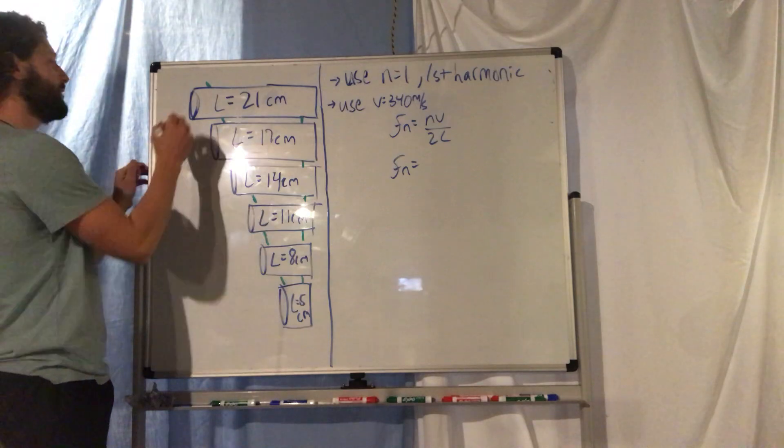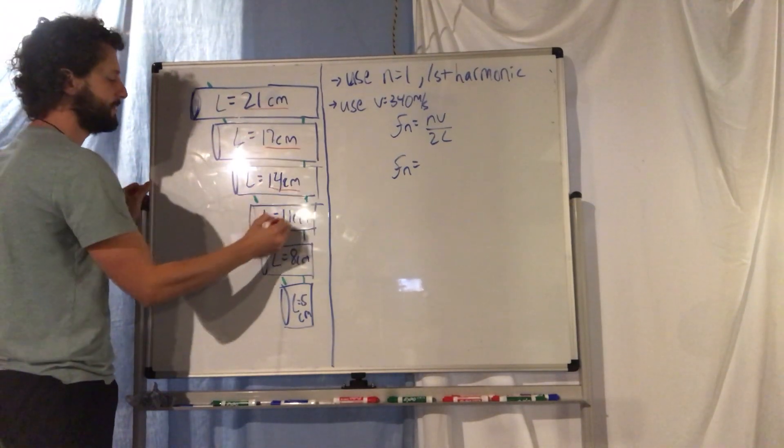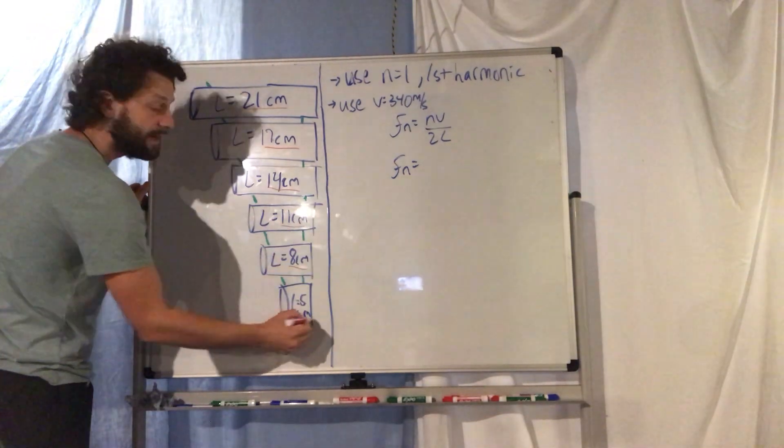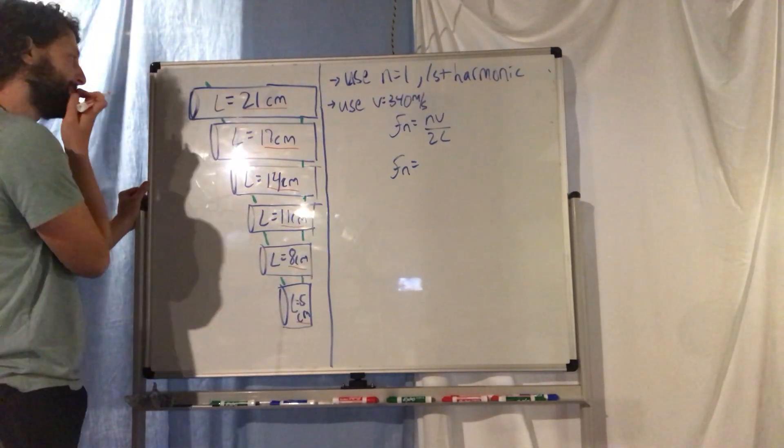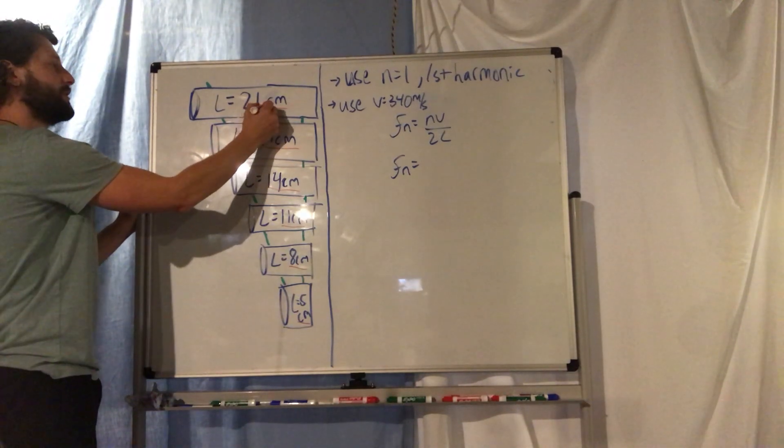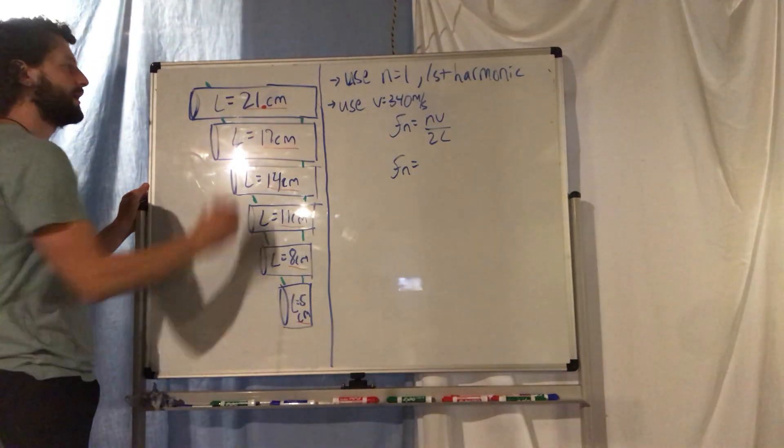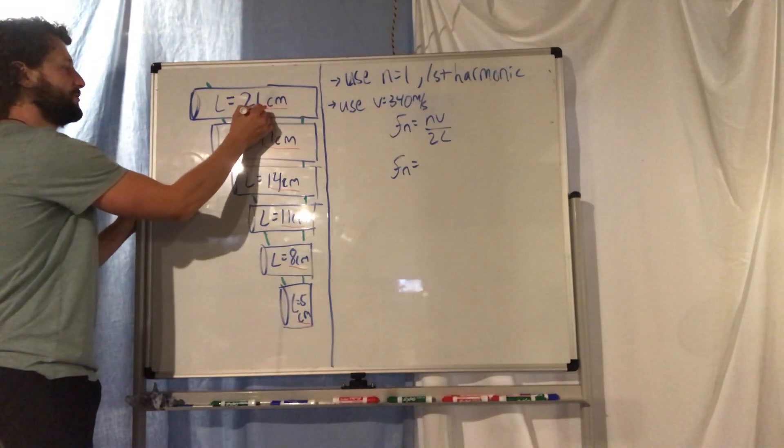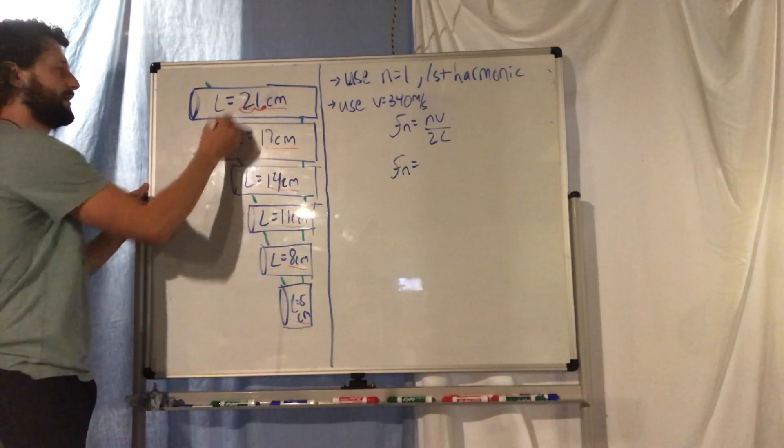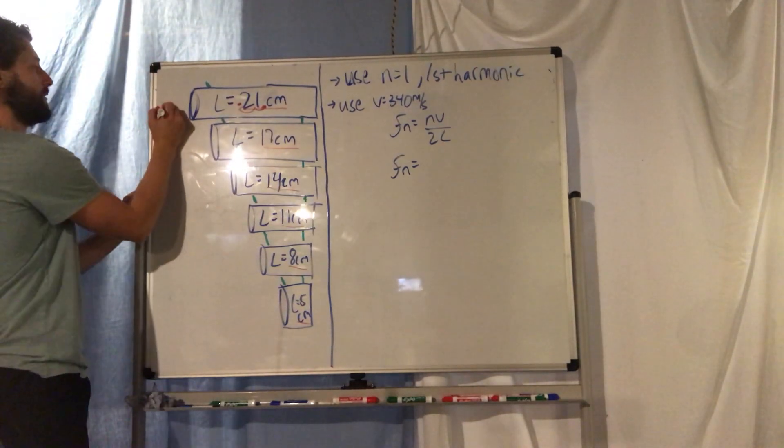So now what I want you to do is convert each of these numbers that I'm underlining, each of these lengths to meters. How do we do that? Here's an example. My longest tube is 21 centimeters. Here's the decimal place for that tube. I need to skip that decimal two spots to the left and get 0.21. I'm gonna write that over here, 0.21 meters.